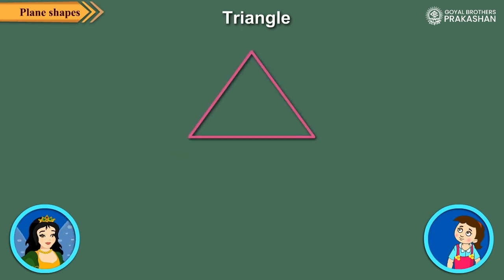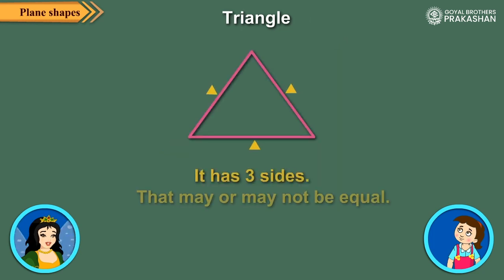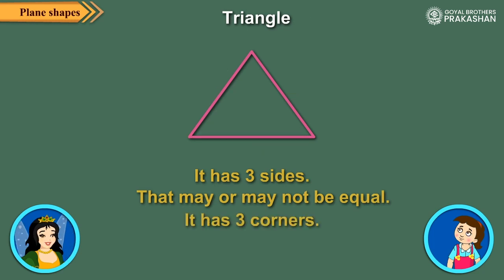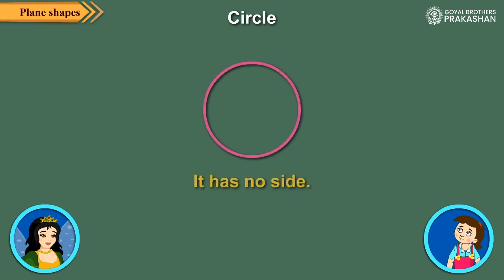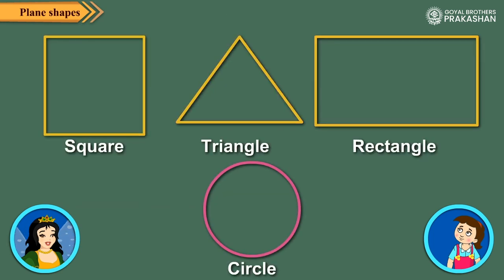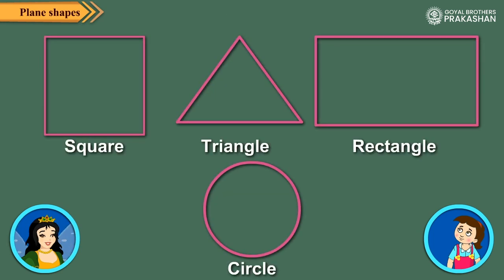The triangle has three sides that may or may not be equal, and it has three corners. The circle has no sides and no corners. The first three shapes have straight edges or sides, but the circle has a curved edge. All these shapes are flat shapes, or two-dimensional shapes.